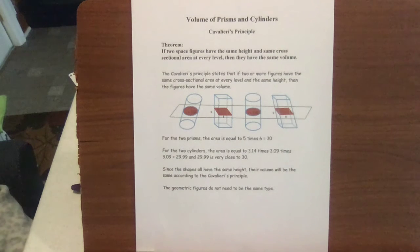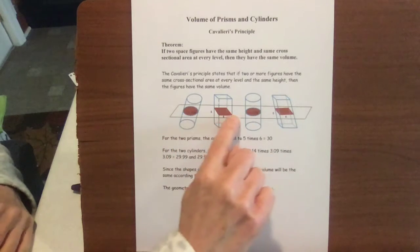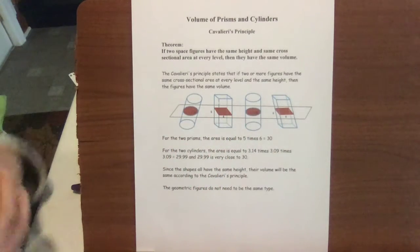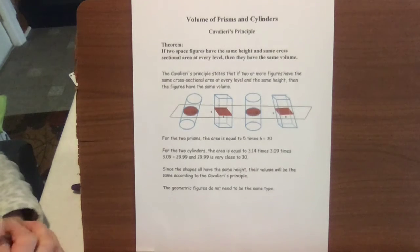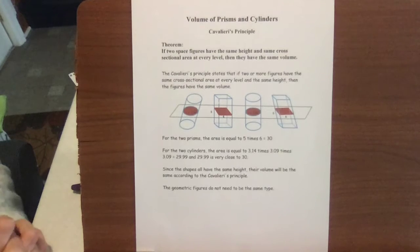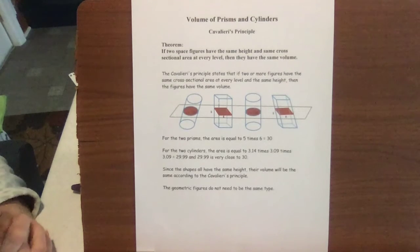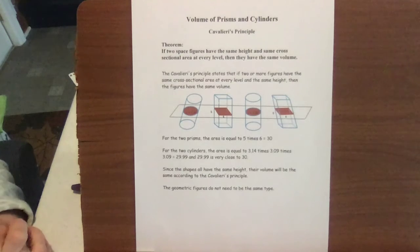Cavalieri's Principle is a theorem that says if you have two space figures or solids that have the same height and they have the same cross-section, meaning that they have slices at the same angle, then if those cross-sections have the same two-dimensional area and the solids have the same height, then they're all going to have the same volume. That's what Cavalieri's Principle means.